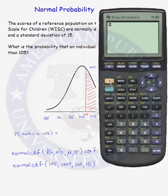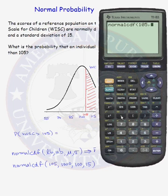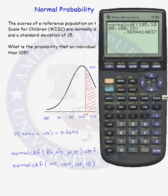On the calculator, go to 2nd, VARS, down to number 2, normalCDF. Enter 105 as the lower bound, 1000 as the upper bound, a mean of 100, and a standard deviation of 15. We find that the probability is 0.3694. The probability that a WISC score will be greater than 105, when scores are normally distributed with mean 100 and standard deviation 15, is approximately 37%.